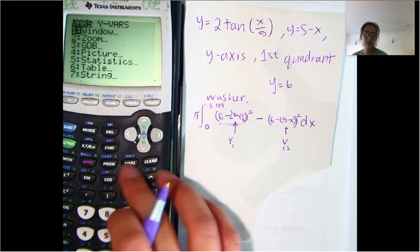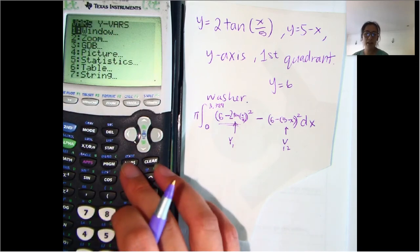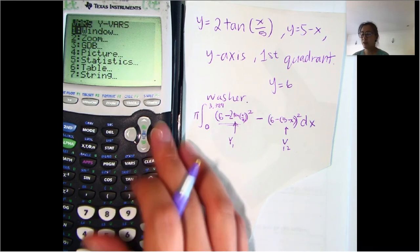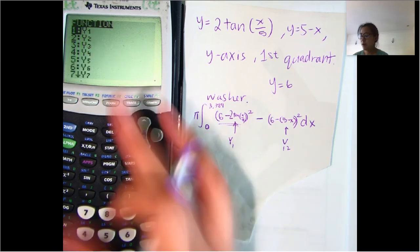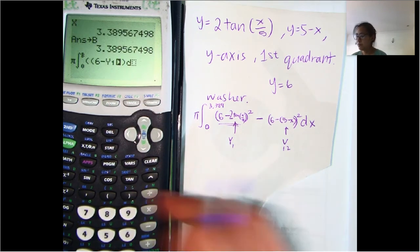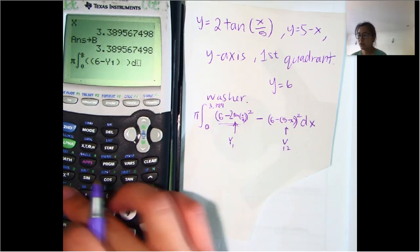So we go to vars, which is for variables, because y is a variable. And then we go right 1 to yvars, and then we go to y1, close parentheses, squared,